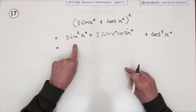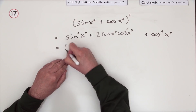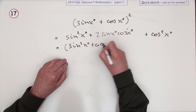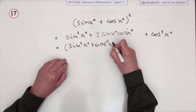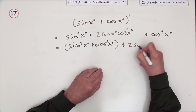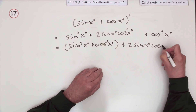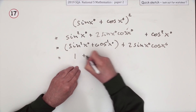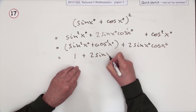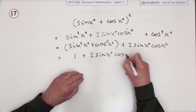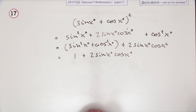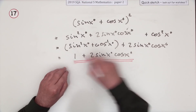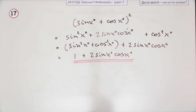You can just express it as 1 plus that. Maybe I'll put them together: sine squared x plus cos squared x plus 2 sine x cos x — they just make 1, giving 1 plus 2 sine x cos x. I don't think you'd be penalised if you couldn't be bothered putting all the degree signs all the way through, as long as you get that result.